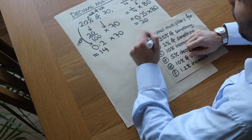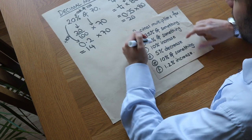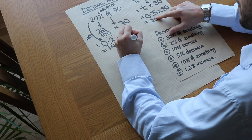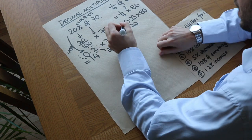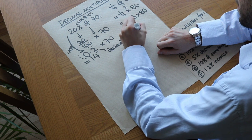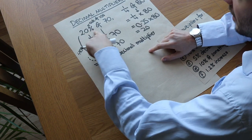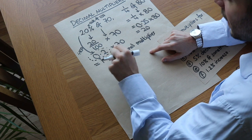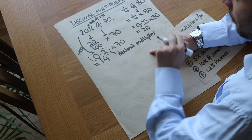We call this a decimal multiplier when it's used in the context of percentages. The reason is because by representing this percentage as a decimal and multiplying by this decimal, it allows us to find that percentage of the amount.